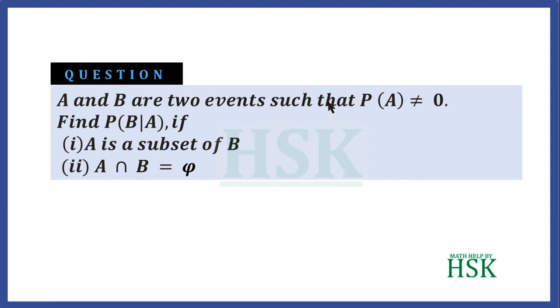In this question we have been given two events, and it is an important information given to us that probability of A is unequal to zero. We have to find probability of B given A under two conditions. In the first part it says that A is a subset of B, and in the second part it says that A intersection B is equal to phi.